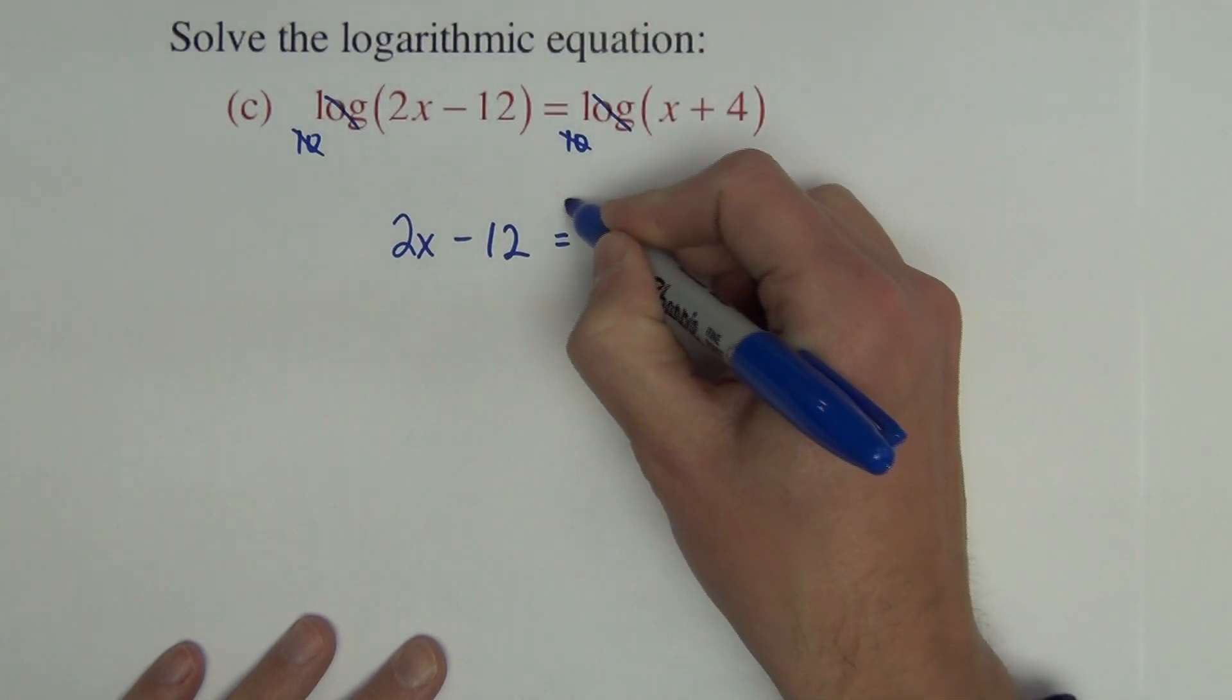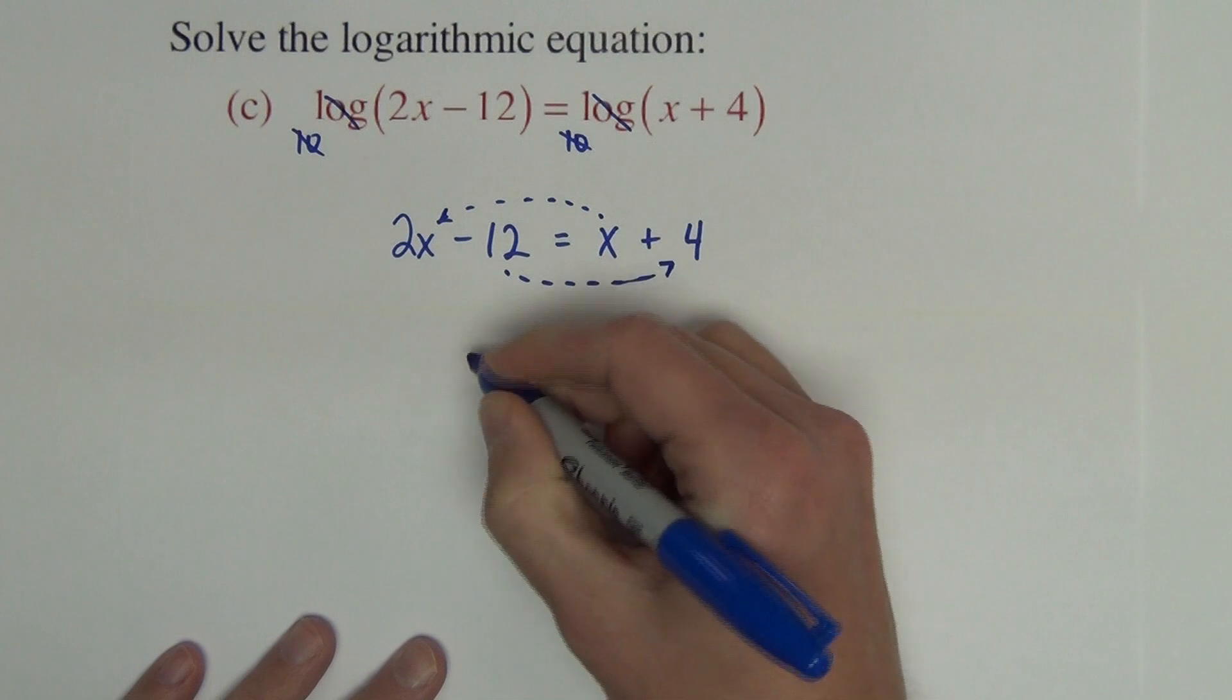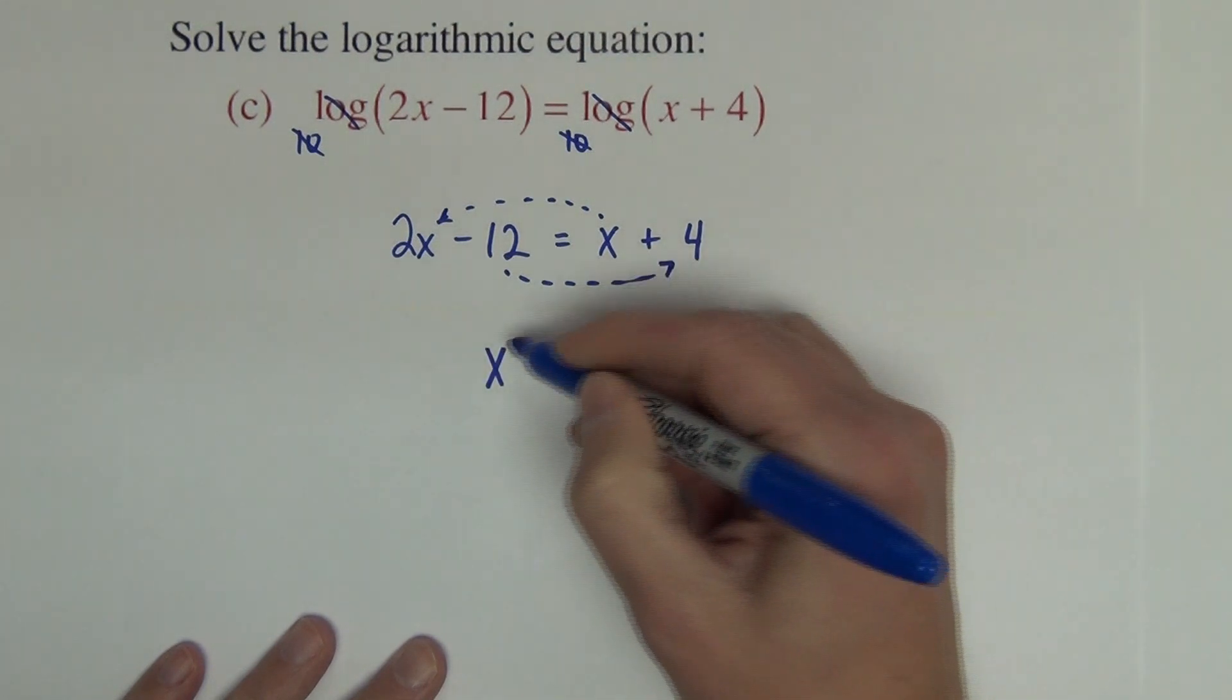And we solve this for x. So the x comes over here. The minus 12 over to this side. We get x equals 16.